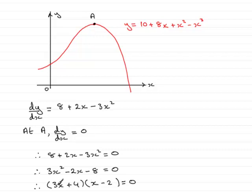You can check that when you multiply this out you get your minus 2x, because you're going to have 3x squared and you're going to have minus 6x plus 4x, and then 4 times minus 2 is the minus 8.